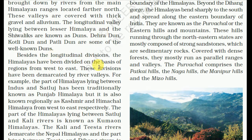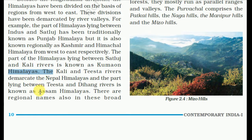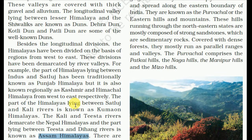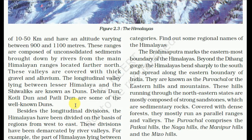The Himalayas have been divided on the basis of regions from east to west. These divisions have been demarcated by river valleys. The part of the Himalaya lying between the Indus and the Satluj has been traditionally known as Punjab Himalaya, but is also known as Kashmir and Himachal Himalaya from west to east respectively. The part between the Satluj and Kali River is known as the Kumaon Himalaya. The Kali and Tista rivers demarcate the Nepal Himalaya, and the part lying between the Tista and the Dihang river is known as the Assam Himalaya. There are regional names also in these broad categories.